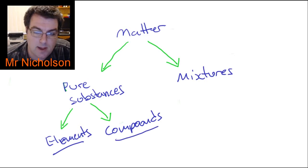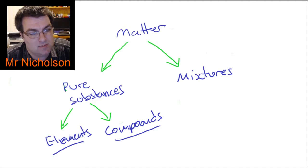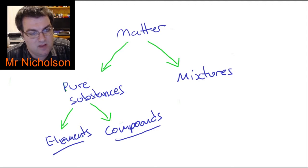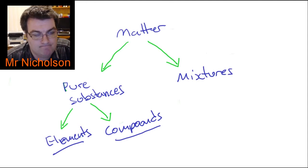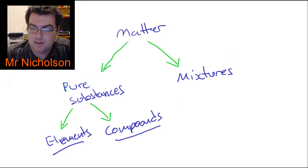Because elements are comprised of only one type of atom, they cannot be separated further by physical or chemical means — you'd just be splitting apart particles that are all the same thing. Compounds, by contrast, are comprised of two or more different types of atoms in a fixed ratio. They're still a pure substance — uniform all the way through — but they can be broken down further using chemical means, into individual atoms or simpler compounds.